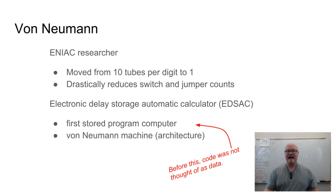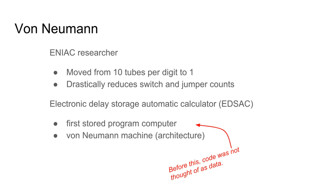After the ENIAC, von Neumann moved on to be part of the EDSAC, another extremely important machine. The EDSAC introduced the concept that computer programs would be read into the same memory in which data is stored, and then executed from memory rather than directly off punch cards or paper tape. As a side effect, we effectively have the first stored program computer.